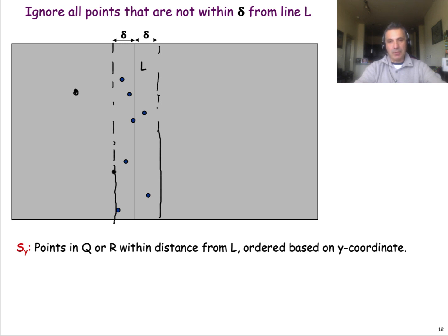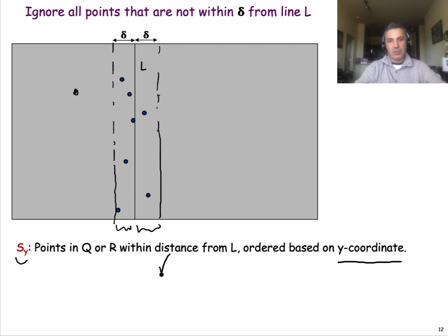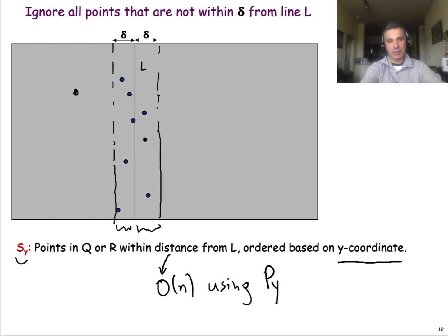This reduction is not necessarily buying us anything, because in the worst case all of the points could be within distance delta from L. So let's define S as the set of points within delta from the vertical line. Specifically, let's order those points based on their y-coordinate — Sy is the sequence of points within delta from L. We can do this in linear time because we already have all points ordered by y-coordinate, so we just do a linear pass through the sorted list Py to find points whose x-coordinate is within delta from L.